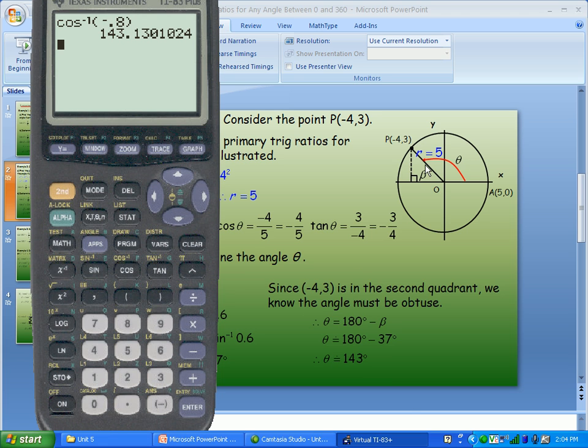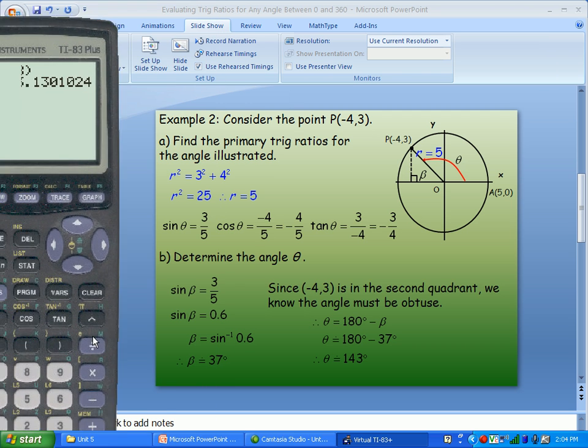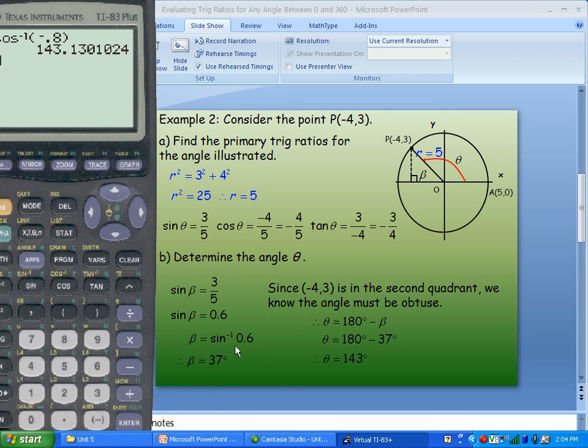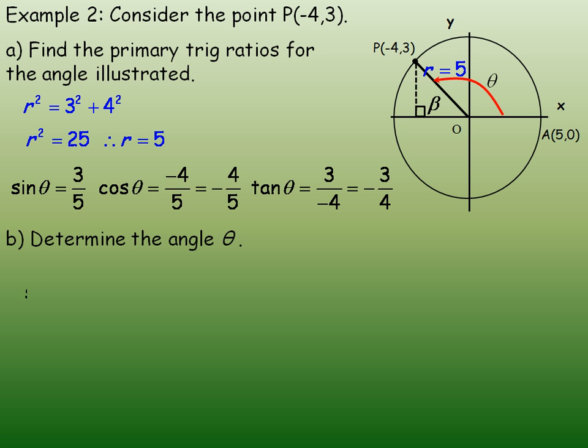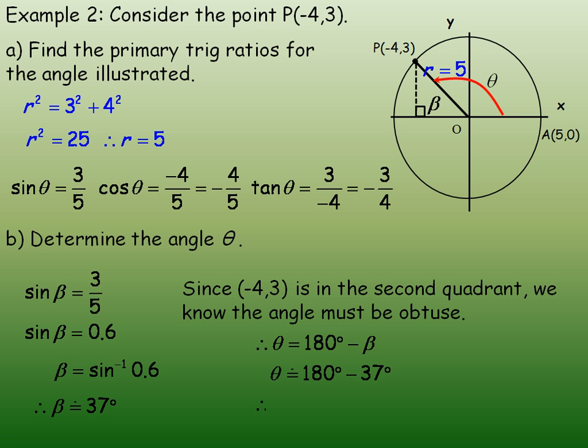So, if you are in the second quadrant, to find an angle, the best trig ratio to use is the cosine. The sine, if you know the sine of the angle, what you have to do is use the sine function, and then subtract from 180 degrees. So, angle theta does work out to be 143 degrees.